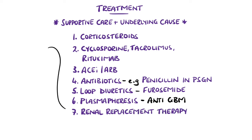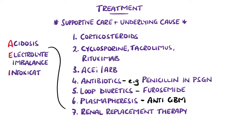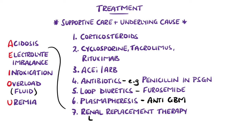The mnemonic AEIOU can help remember indications for renal replacement therapy, like severe acidosis or electrolyte imbalances, intoxication with drugs or medication, fluid overload, or symptomatic uremia. This could be done through dialysis, but renal transplant may be the only treatment in some cases.